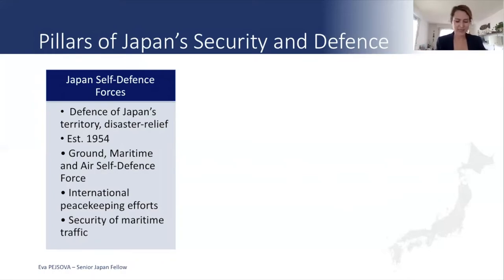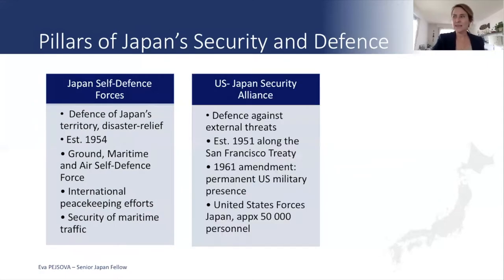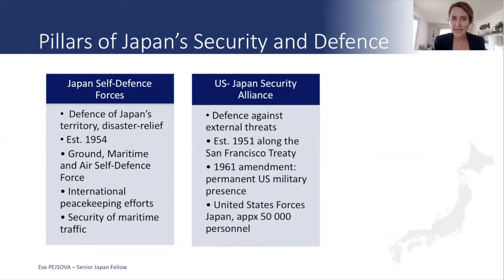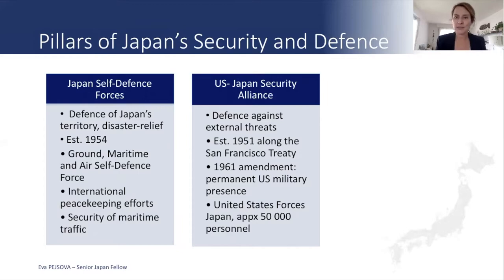Today, the Self-Defense Forces also participate in international peacekeeping efforts and in safeguarding the security of maritime trade, which is a key strategic interest for Japan as an island nation. Anything relating to external security is guaranteed by the United States in the framework of the US-Japan security alliance, established in 1951 along the San Francisco Treaty and eventually amended in 1961 to establish a permanent US military presence on Japanese soil. To date, we count about 50,000 US military personnel in Japan under the United States Forces Japan, which are an integral part of Japanese security and defense.